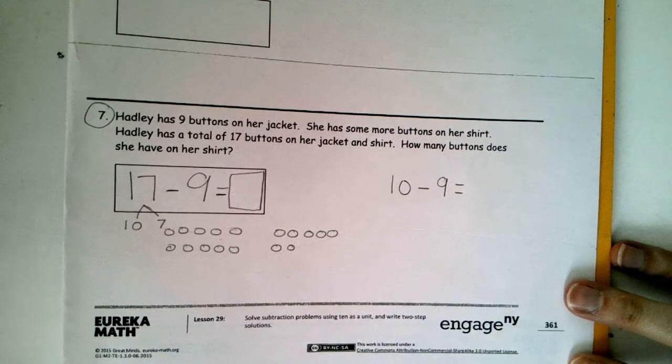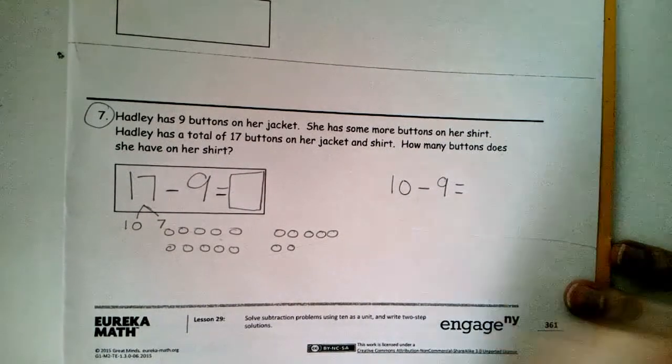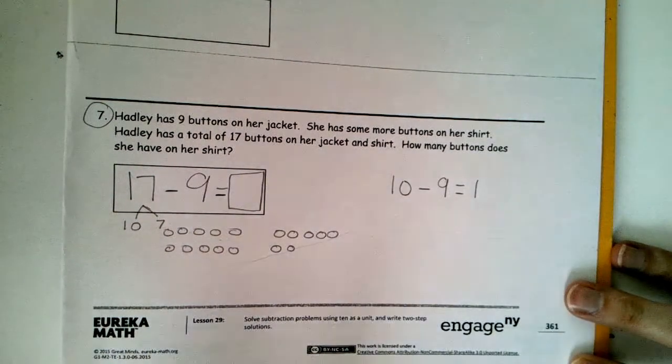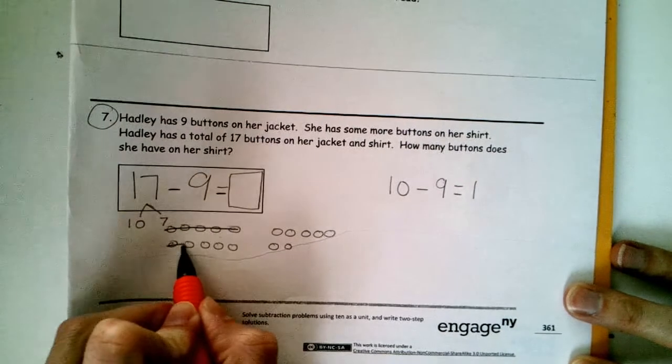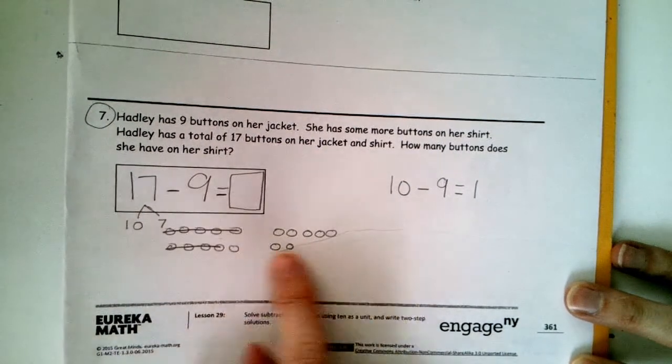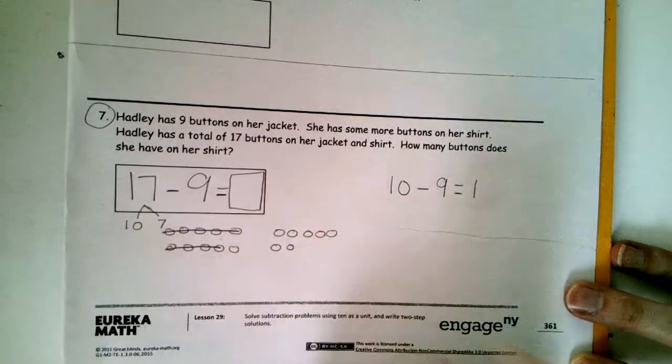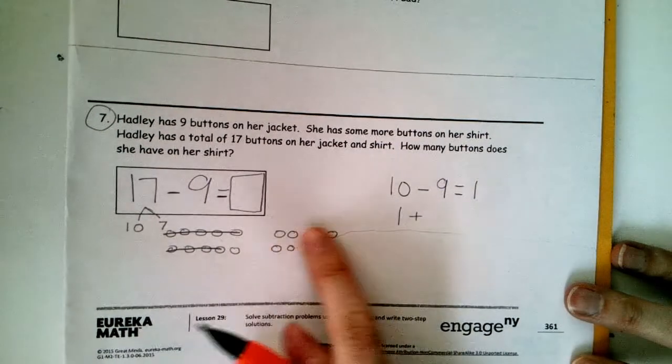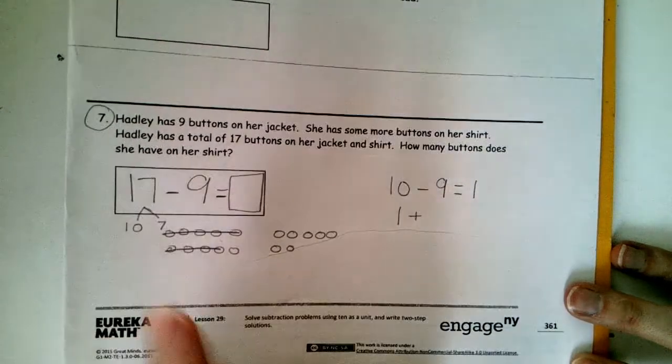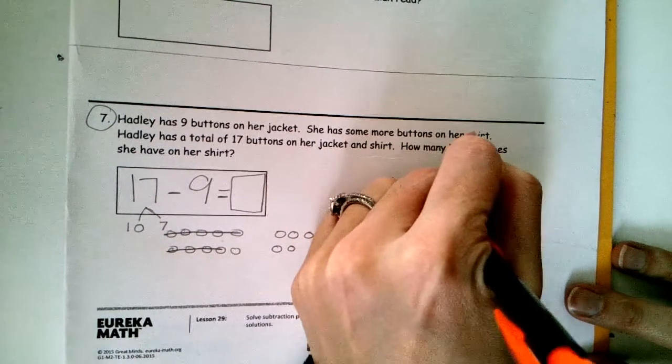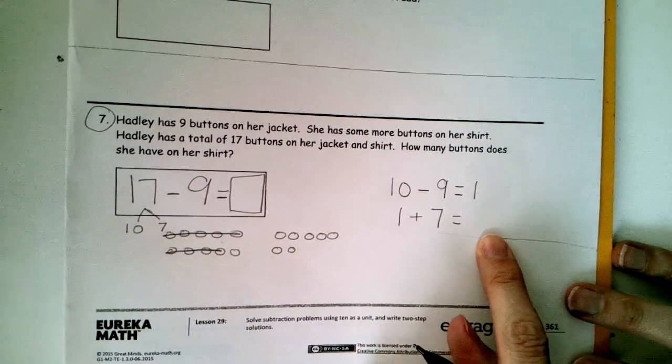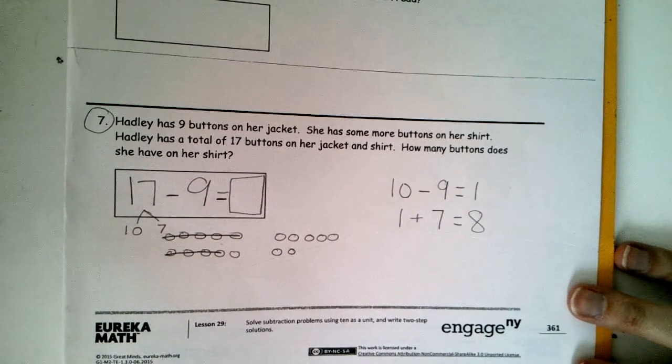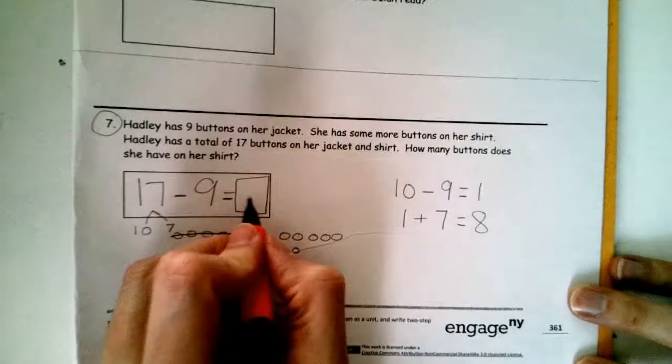If you started with your take from 10 strategy, you would have still taken your friendly 10 out so that you can subtract 9. 9 and what make 10? 9 and 1 make 10. Or, if you took 9 from 10 over here, we have 1 left in this group. We still have these though. So, we need to put them back together. 1 and what's left? What's still left here and here in our number bond? 7. 1 more than 7 is what? It should be 8. Good. So, 17 take away 9 equals 8.